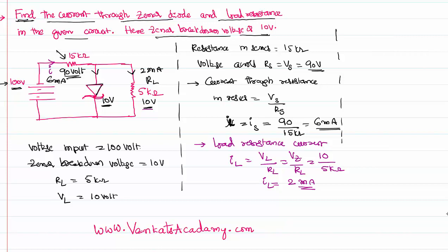The Zener diode and load resistance are in parallel, and in parallel the current shares. We can say I total, or I through the series resistance, equals I across the Zener diode plus I across the load resistance. I series is 6 milli amperes total. I across the load resistance is 2 milli amperes. Therefore, I across the Zener diode is 6 minus 2, which equals 4 milli amperes.